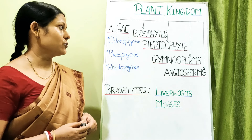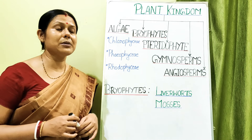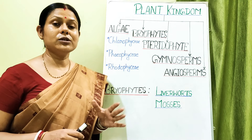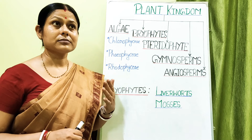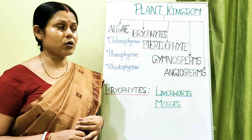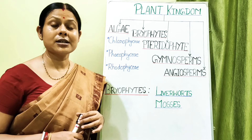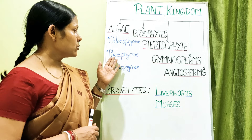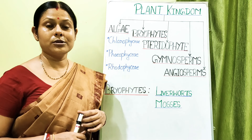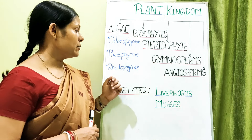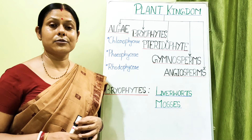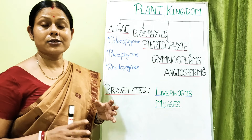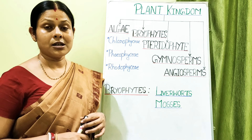The classification is based on pigment. In your NCERT there is a table listing the different characteristics used for classifying algae. Regarding reserve food: in Chlorophytes it is starch; in Phaeophytes it is mannitol or laminarin; and in Rhodophytes it is floridean starch.